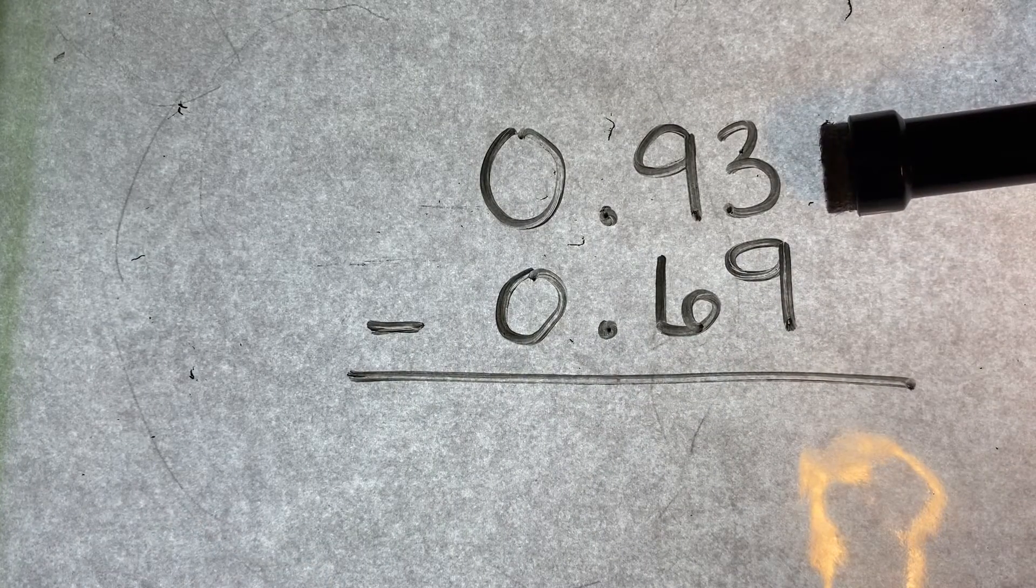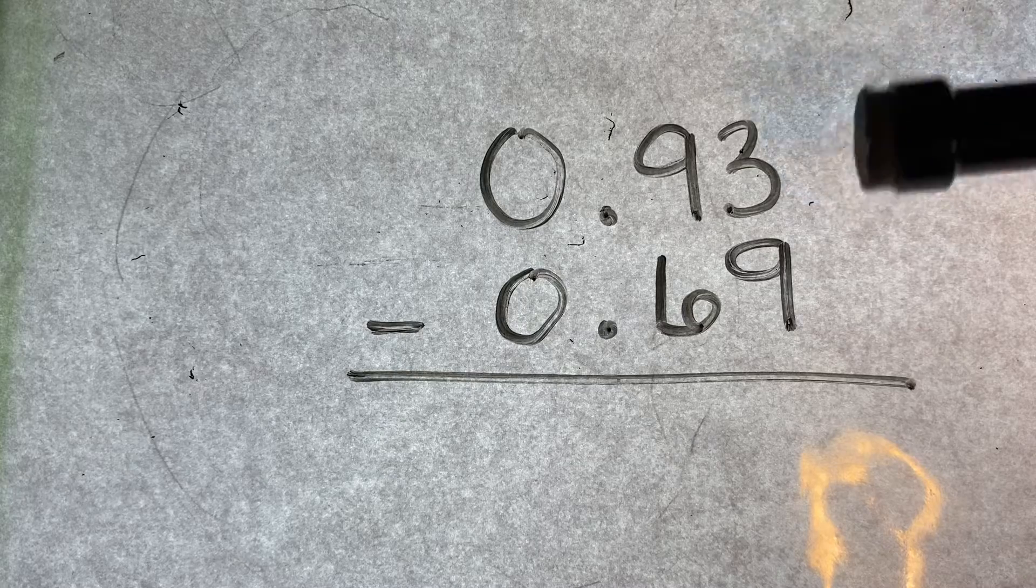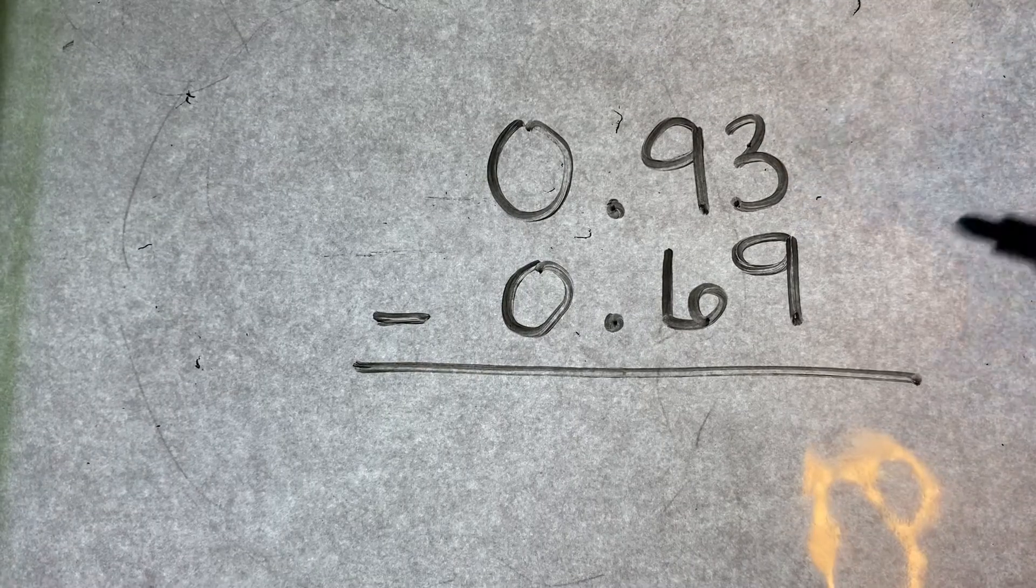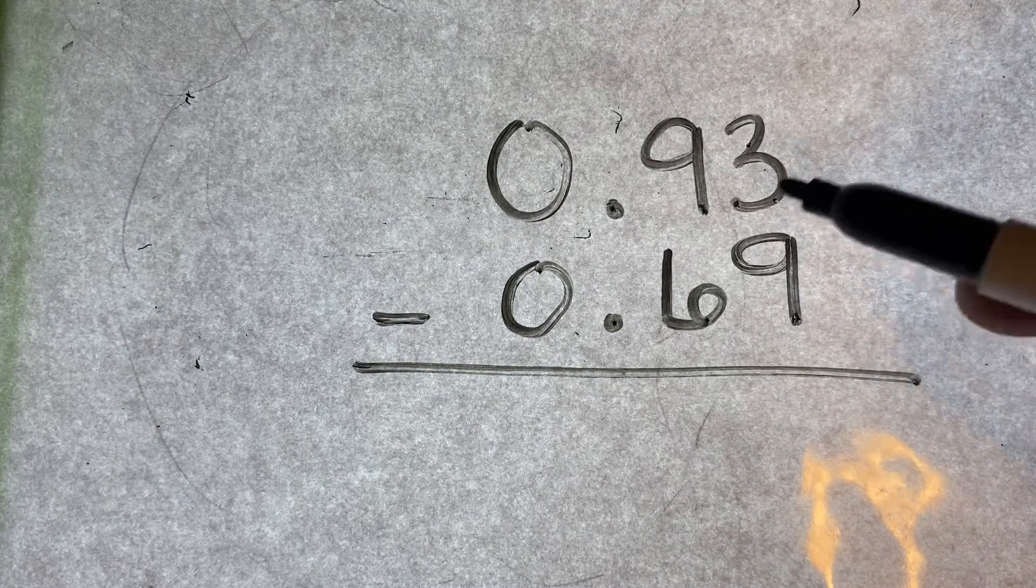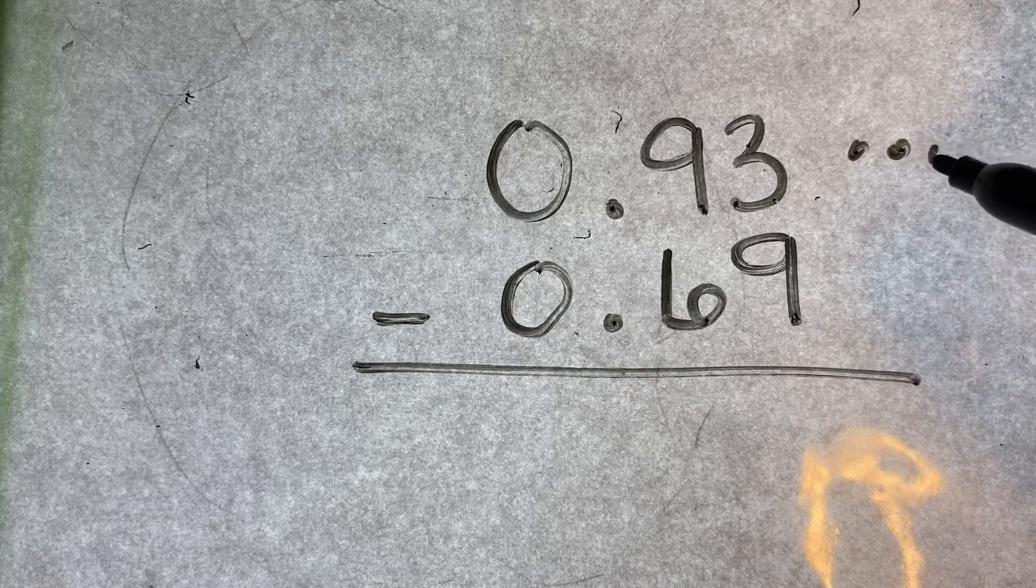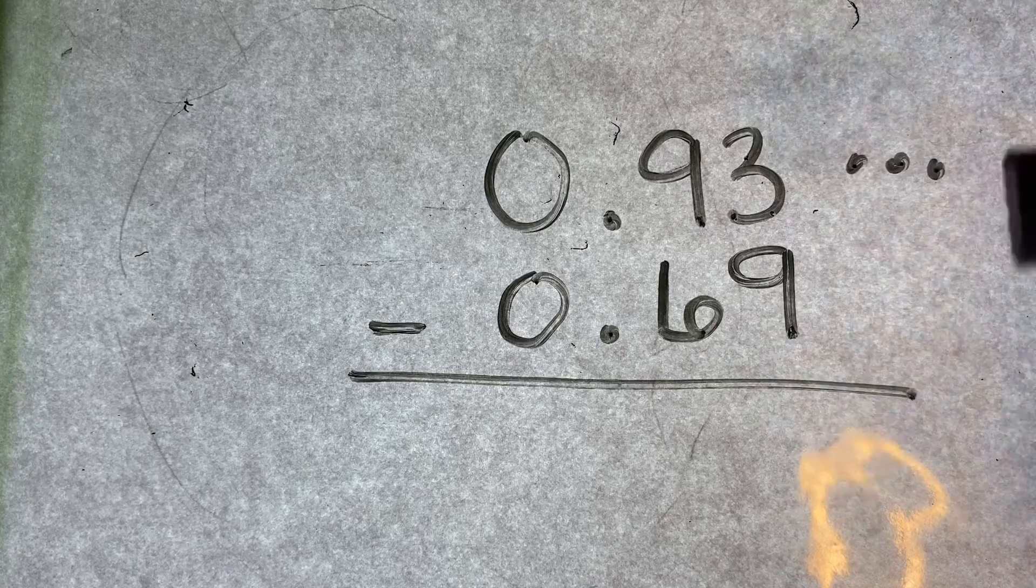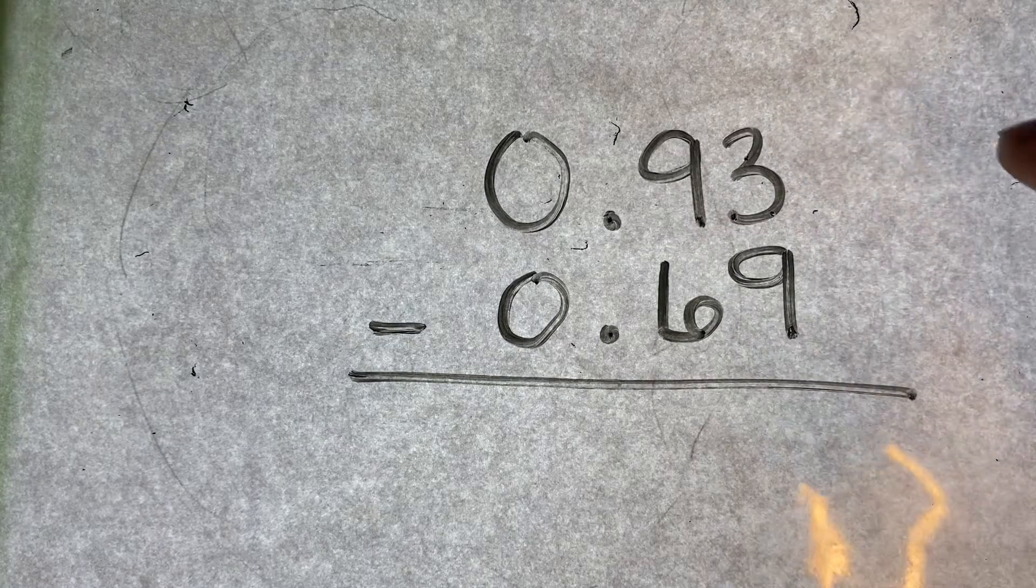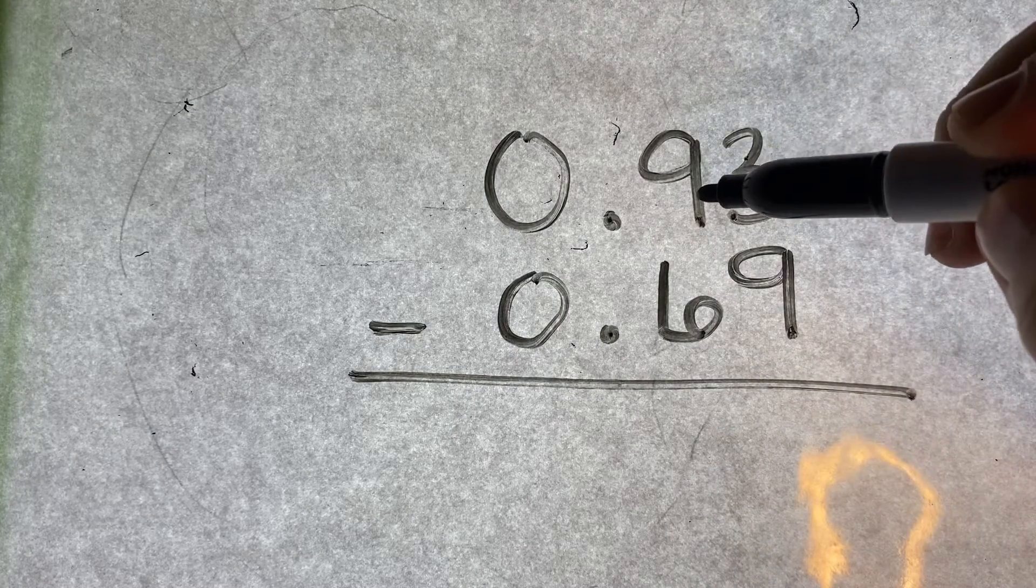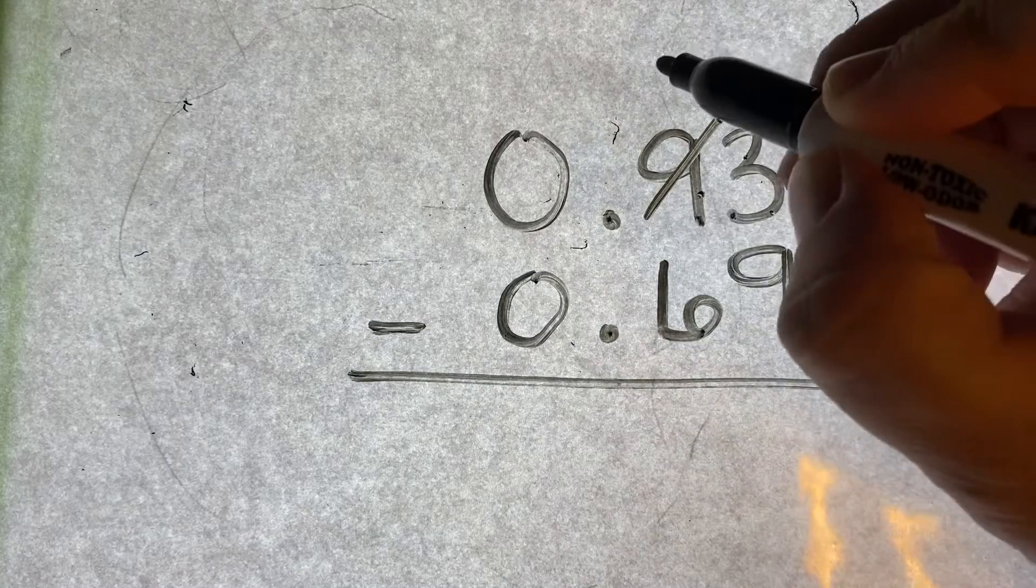I'm starting with the number on top, which is my larger number. Ninety-three. I need to take nine from three. One, two, three. I only have three. I can't take nine away from this. I have to borrow. So I borrow from this. This becomes an eight.